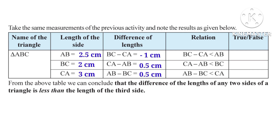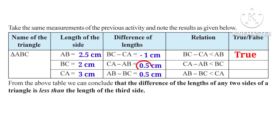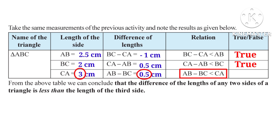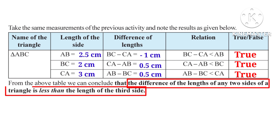Observe that minus 1 is less than 2.5, so we can say that BC minus CA is less than AB — the statement is true. Now 0.5 is less than 2, so CA minus AB is less than BC. It is also a true statement. Now 0.5 is less than 3 cm, so AB minus BC is less than CA. So from the above table, we can conclude that the difference of the lengths of any two sides of a triangle is less than the length of the third side.